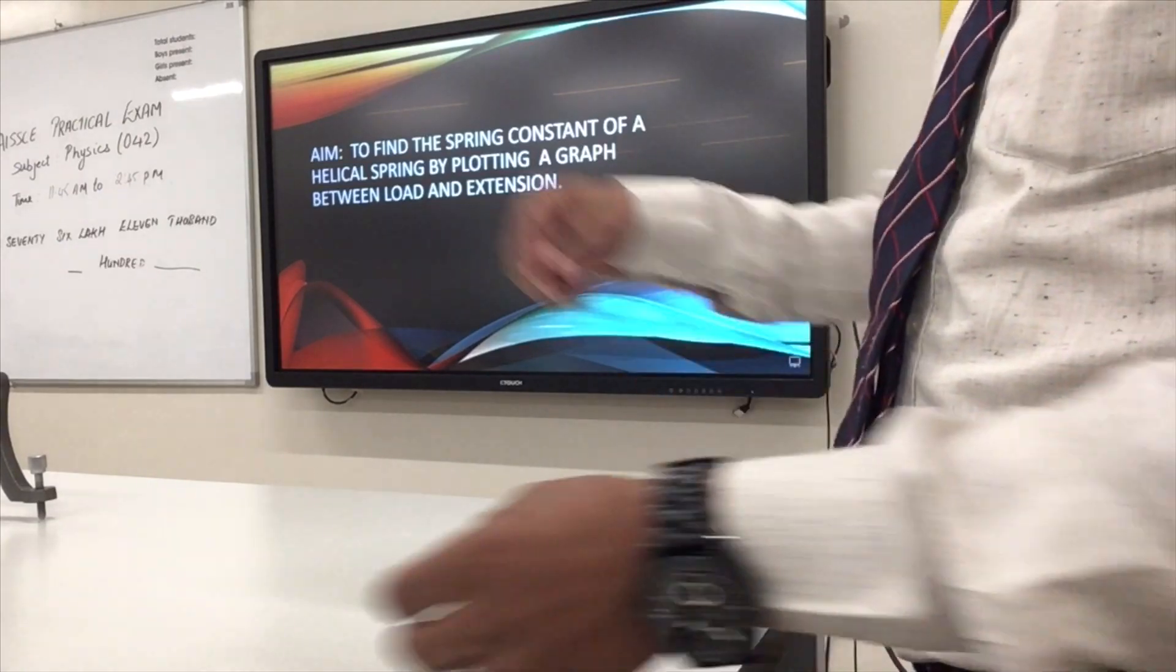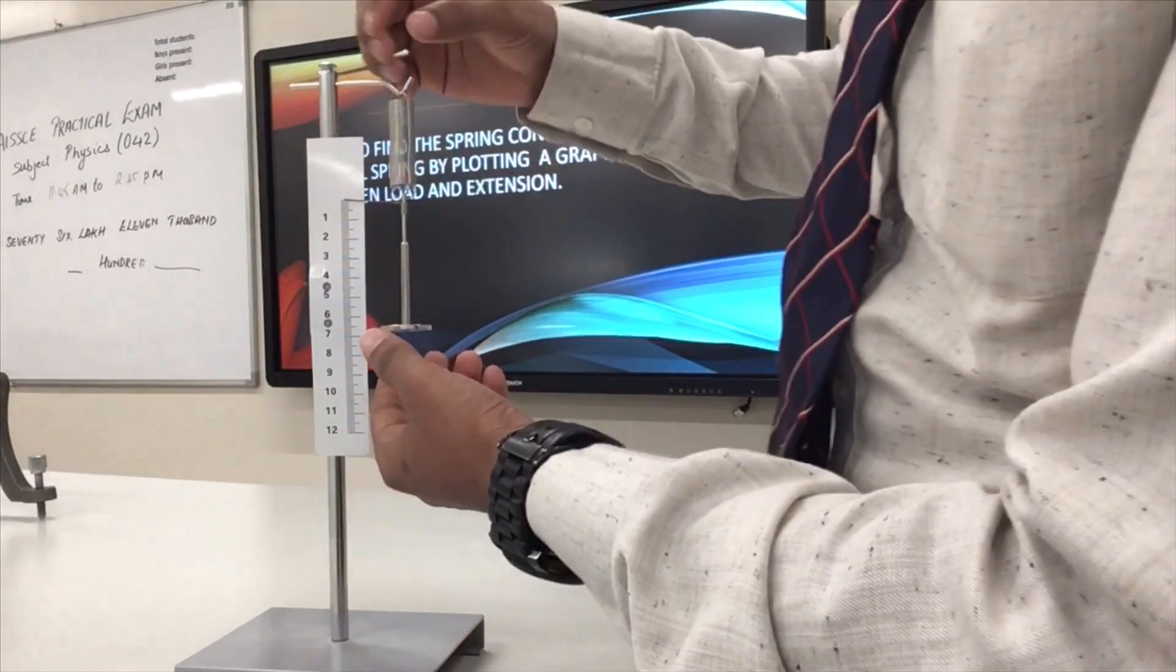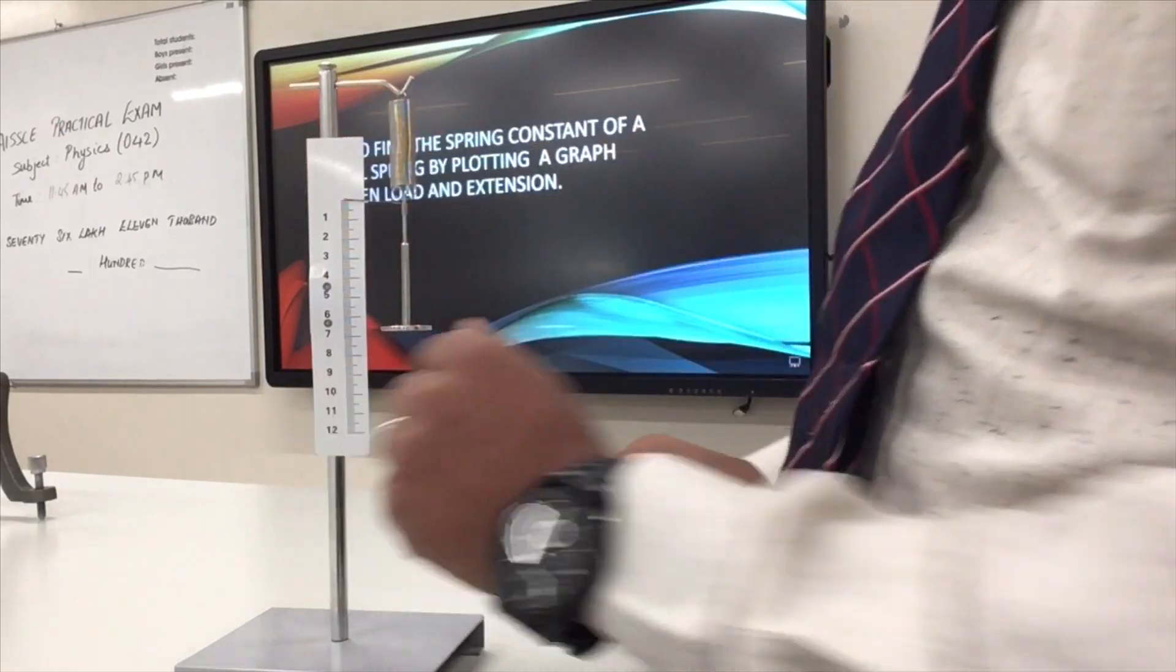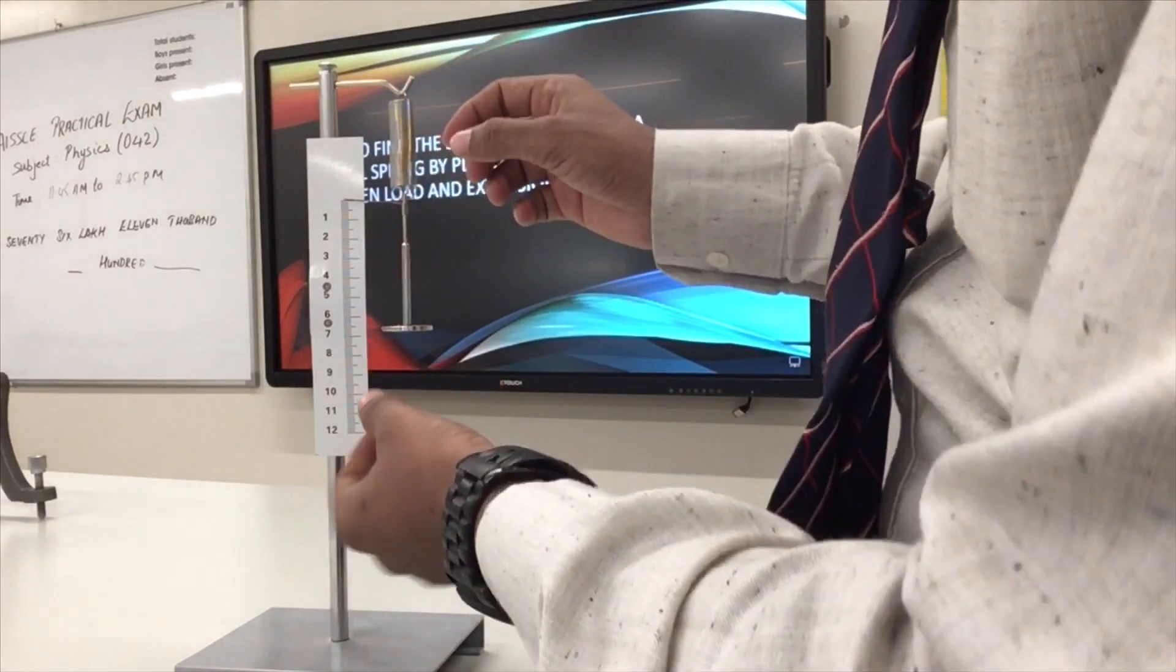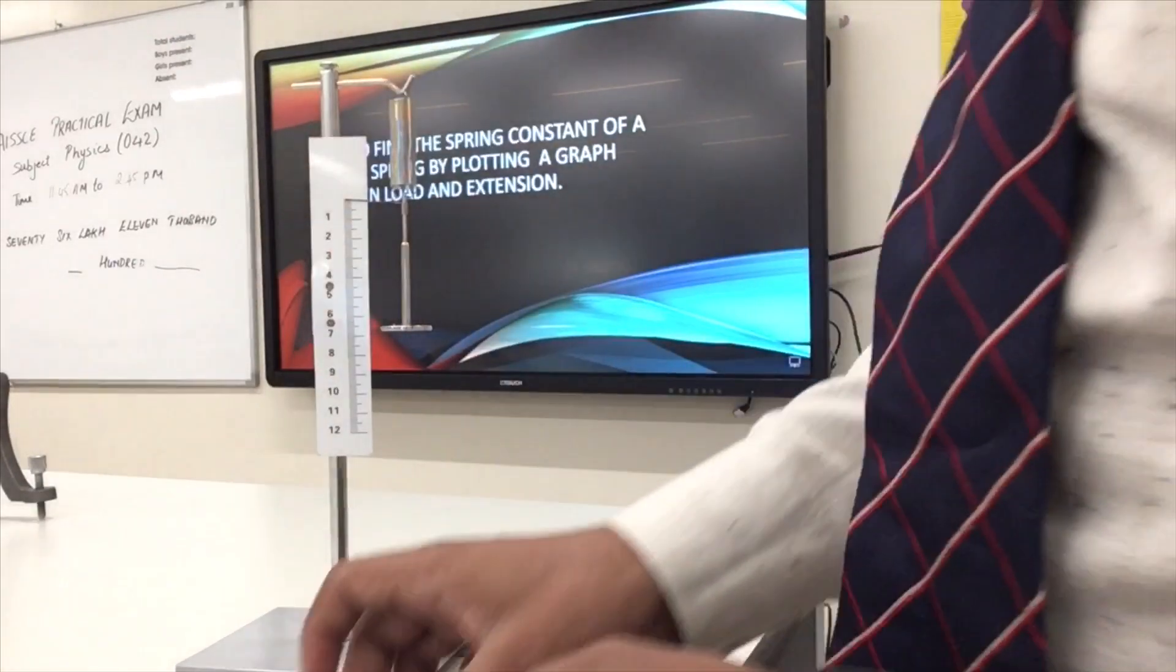So I have a Hooke's apparatus set up here. You can see the apparatus set up with the pointer, spring, stands, and the scale. Make sure at the beginning of your experiment the pointer should be at zero.